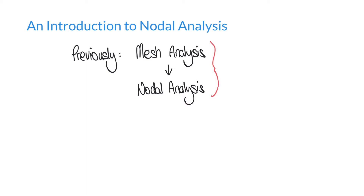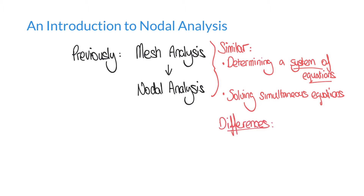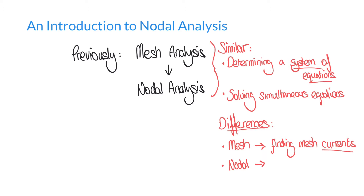It's important to note that mesh analysis and nodal analysis are similar in several ways. Both involve first determining a system of equations, and both require these systems to be solved by methods such as simultaneous equations, Cramer's rule, the inverse matrix, or otherwise. Where they differ is that mesh analysis is concerned with finding currents or mesh currents, whereas nodal analysis is primarily occupied with finding voltages at various points in the circuit, which we call nodes.